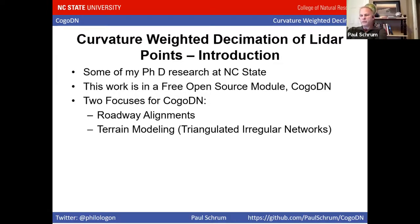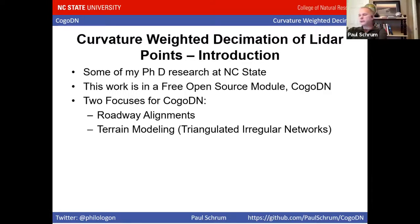Curvature weighted decimation of LiDAR points is the fruit of some of my PhD research at NC State. The module is free open source code under the Apache license, and you can see the GitHub repository on my slides. KogoDN is the name of the module, and it works under .NET using C sharp. KogoDN has two focuses: roadway alignments, and the main focus — terrain modeling using triangulated irregular networks.